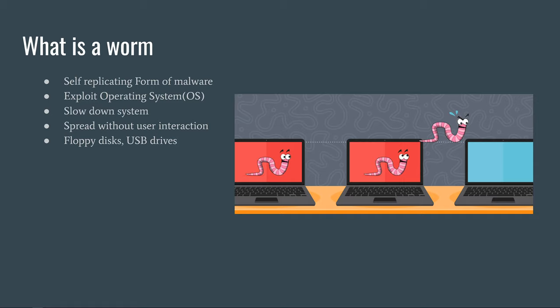Worms generally spread without the need for user interaction. While simply being active on the infected system, a computer worm can easily become widespread. Generally, the most common vector for a computer worm is infected storage media, such as floppy diskettes or USB drives.